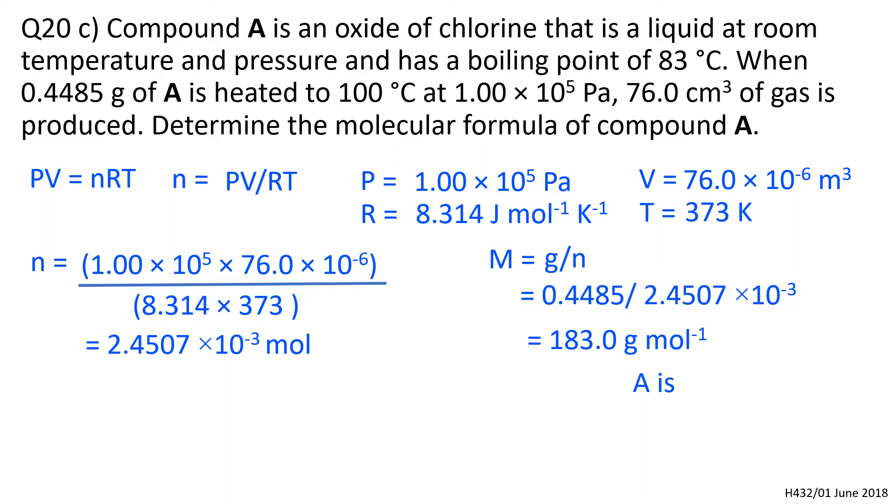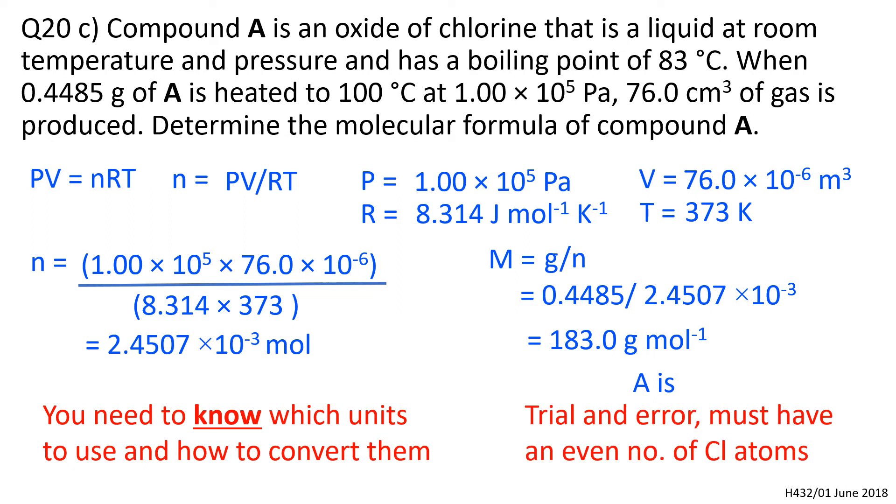If you've got two chlorines, that's 35.5 plus 35.5. Subtract from 183 - how many oxygens does that leave you with? If two didn't work, would four work? Four would be too many. It must have an even number of chlorine atoms. A must be Cl₂O₇.